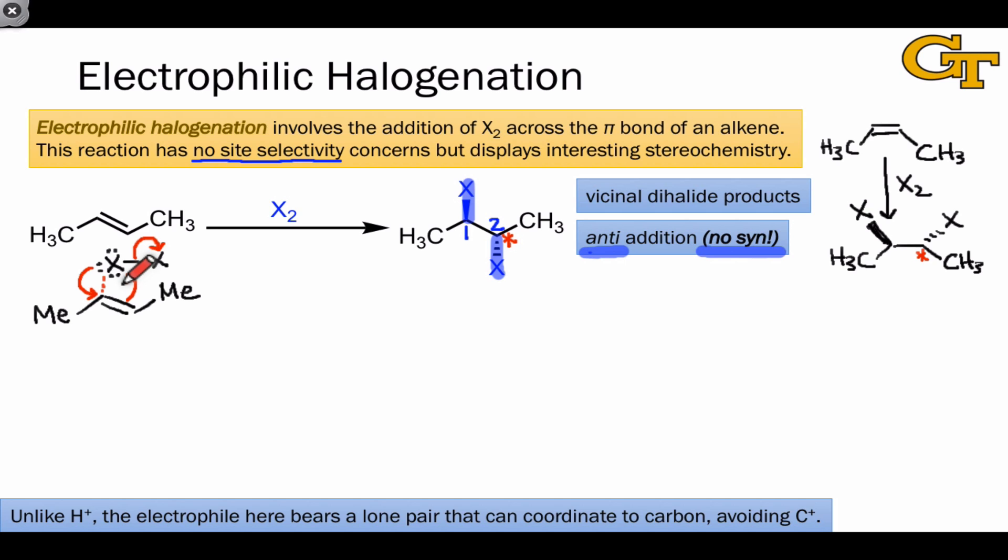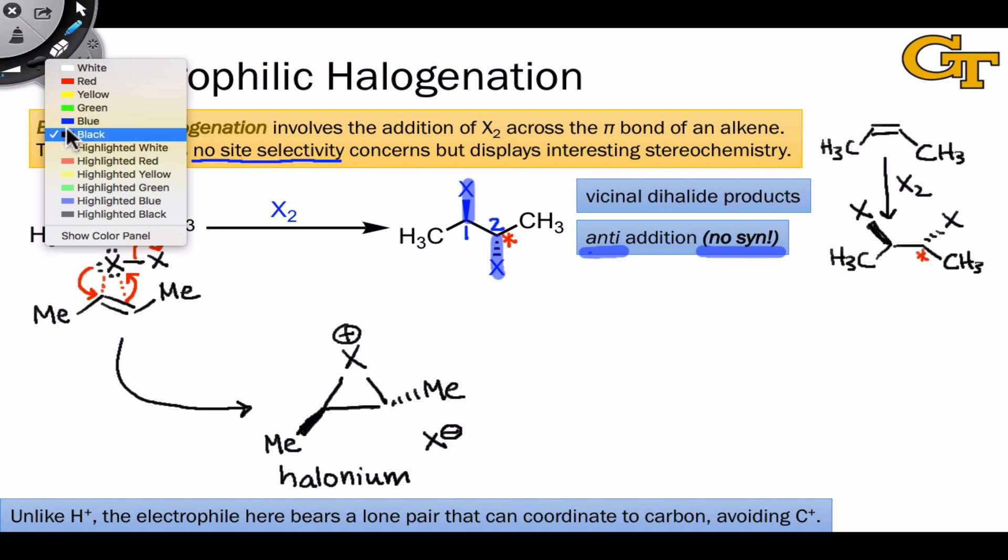As a result, two bonds to X are formed simultaneously to both carbons of the alkene. This electron flow leads to formation of an interesting intermediate containing a positively charged halogen atom within a three-membered ring. Stereochemically, because both bonds to the X atom were made simultaneously, the methyl groups maintain their orientation from the starting alkene. This step has also given rise to X minus.